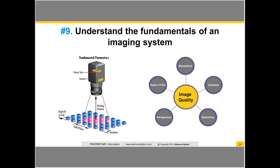Last tip: understanding the fundamental parameters of an imaging system. There are whole other webinars and videos on these specific areas, but understanding them walking in is critically important. You'll want to look at: why you need a certain working distance, what field of view is required, what the limiting or desired resolution is, how much depth of field you really need—remembering the compromise between resolution and depth of field from tip five—what distortion you can tolerate in a measurement application, and how much measurement accuracy and perspective control you need.